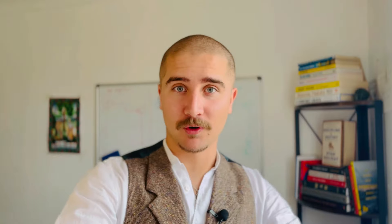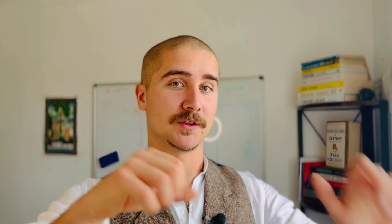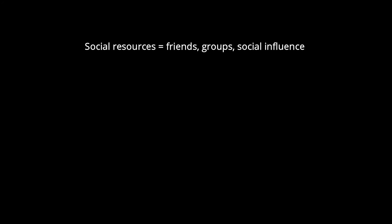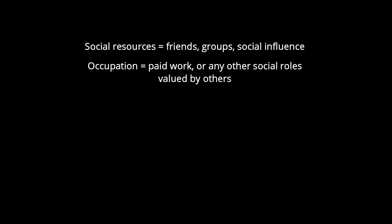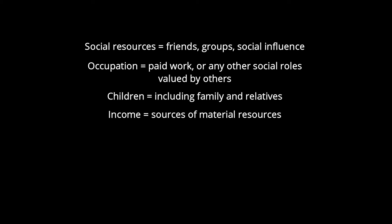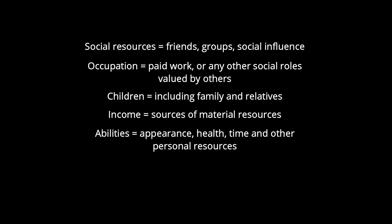According to evolutionary psychology, there are six areas where we can allocate our resources to in life: social resources — so friends, groups, social influence; occupation — paid work or any other social roles valued by others; children including family and relatives; income — sources of material resources; abilities, appearance, health, time and other personal resources; and love, sex in an intimate relationship.